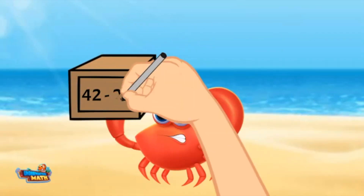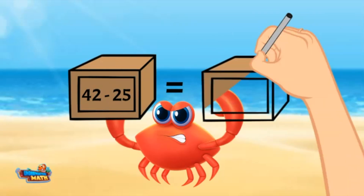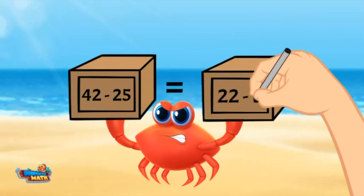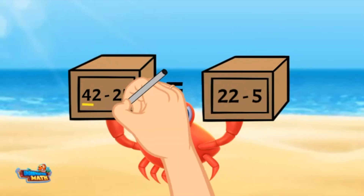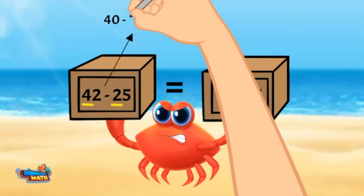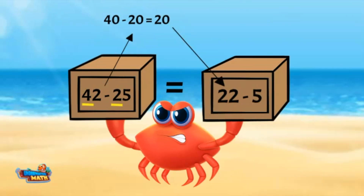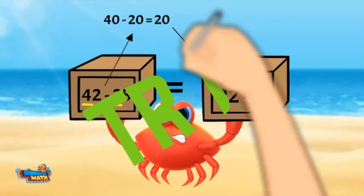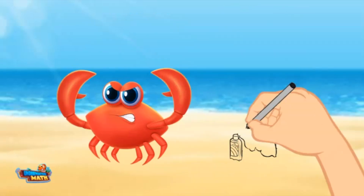One more try: is 42 minus 25 equal to 22 minus 5? I am going to start by subtracting the tens — 40 minus 20 equals 20. This means the new equation would be written as 22 minus 5. This equation is true!